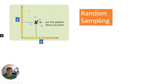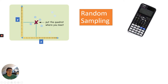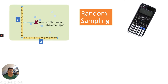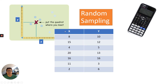To decide where to put the quadrat, use a random number generator on a calculator. You could also put numbers in a hat or blindfold yourself and pick from different piles — as long as it is random, that's fine. For example, if your first coordinate is 8 metres on x and 10 on y, you take the quadrat, place it at that location, and count the number of daisies.